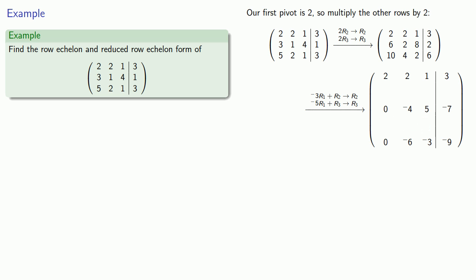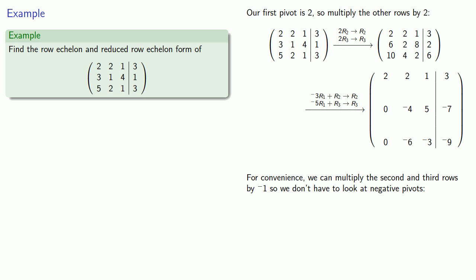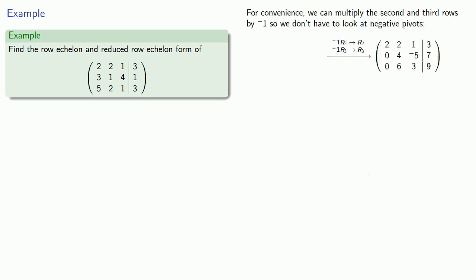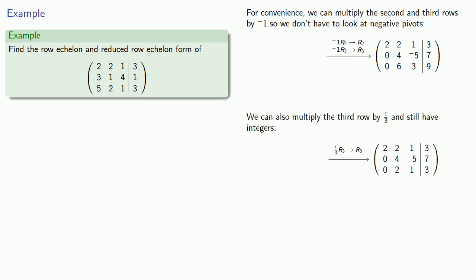And, purely as a matter of convenience, we can multiply the second and third rows by negative 1 so we don't have to work with negative pivots. We also note that every entry in the last row is divisible by 3, so we can multiply everything by one third and get a smaller set of coefficients.